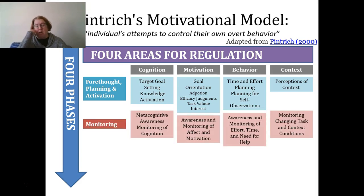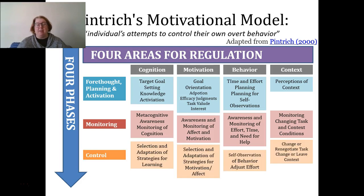Then we're monitoring our progress throughout the task. We're aware of our cognition, our affect and motivation, our effort, time, our need for help, and we're monitoring the context that might be changing throughout the task. Then we're taking control: in our cognition, we're selecting and adapting our strategies for learning as we go. We're also selecting and adapting strategies for motivation, observing our behavior and adjusting our effort, and we might be changing or renegotiating the task — even choosing to leave or change the context.